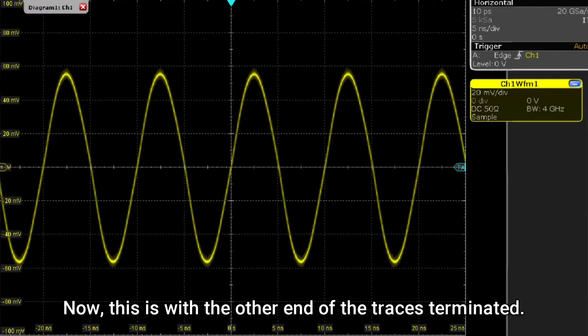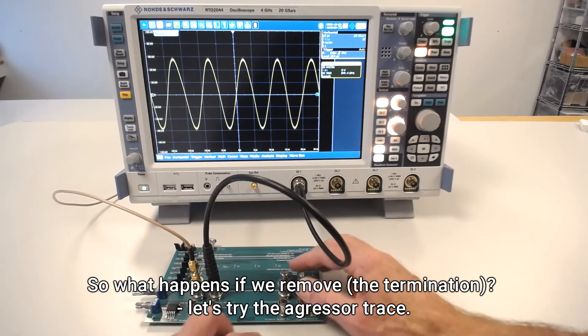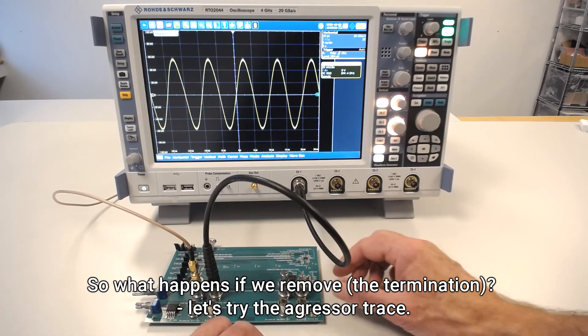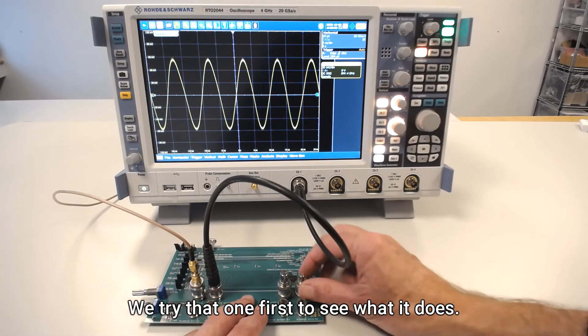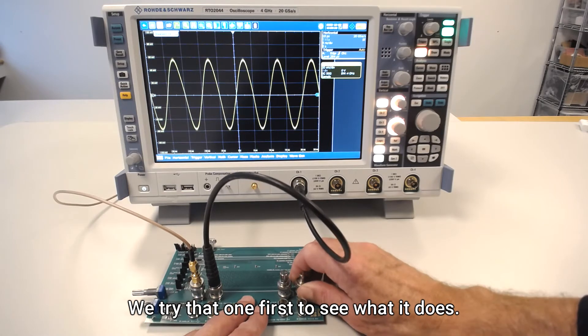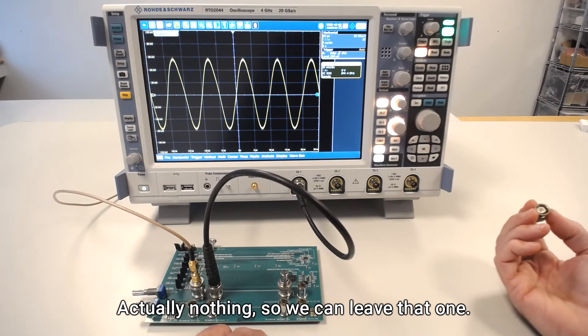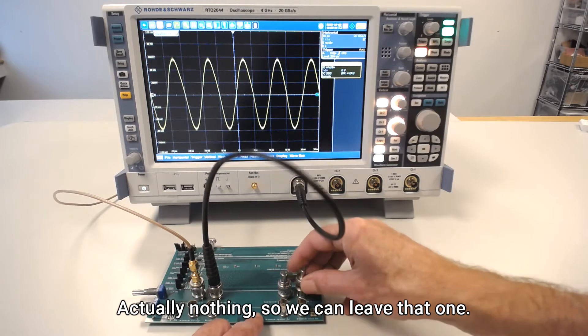Now this is with the other end of the trace terminated, so what happens if we remove the termination? Let's try first the aggressor trace, so we try that one and see what that does. Actually nothing, so we can leave that one off if we want to.